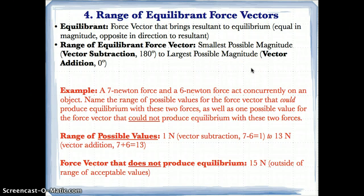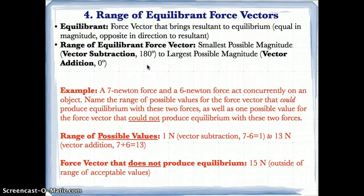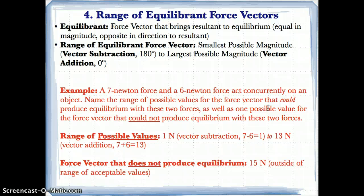The range of the equilibrant force vectors depends on the values of vectors at two different angles: from the smallest possible magnitude, which is a result of vector subtraction at 180 degrees, to the largest possible magnitude, which is vector addition at zero degrees. At 180 degrees the vectors go in opposite directions so you subtract them; at zero degrees they go in the same direction so you add them.